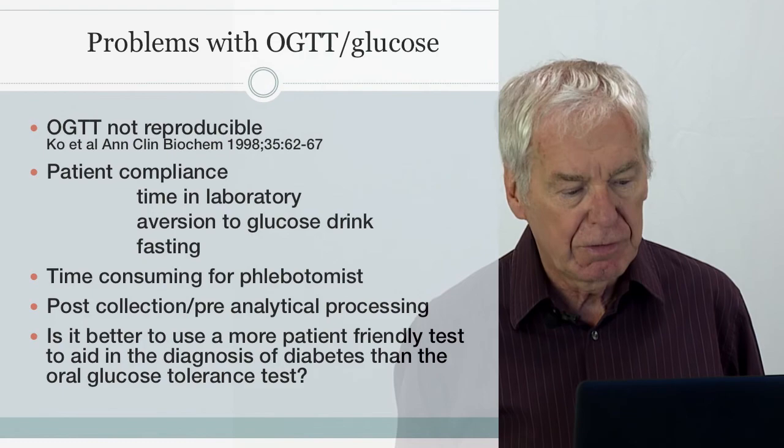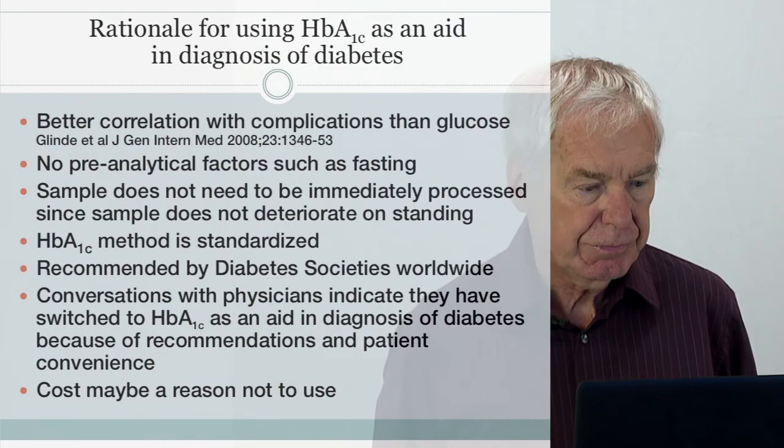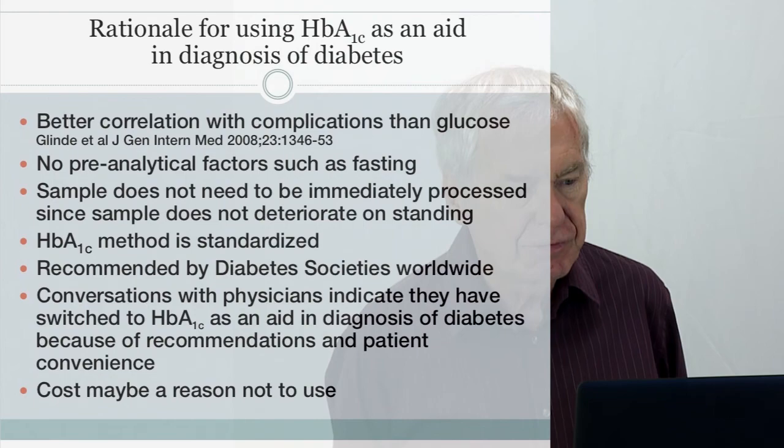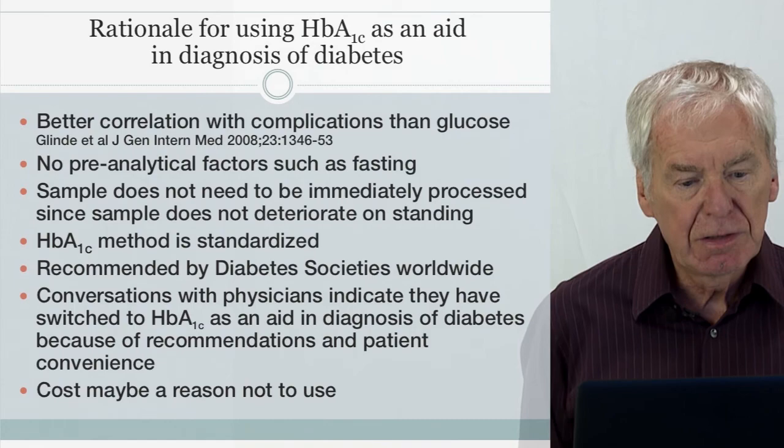Given the increase in the incidence of diabetes, is it better to use a more patient-friendly test to aid in diagnosis than the oral glucose tolerance test? This is the rationale for using A1c. First, there is better correlation with complications than glucose, particularly retinopathy. There are no pre-analytical factors such as fasting — patients can come whenever convenient.